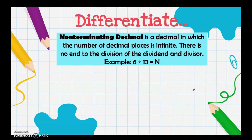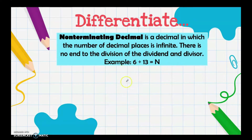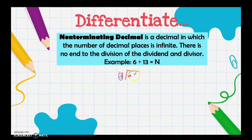Next, another kind is non-terminating decimal — it is a decimal in which the number of decimal places is infinite; there is no end to the division of the dividend and divisor. For example, we have 6 divided by 13.